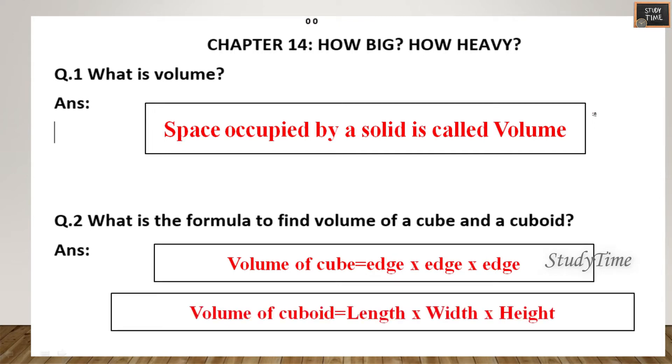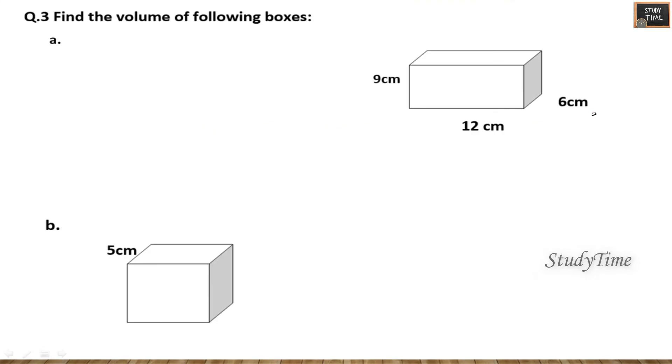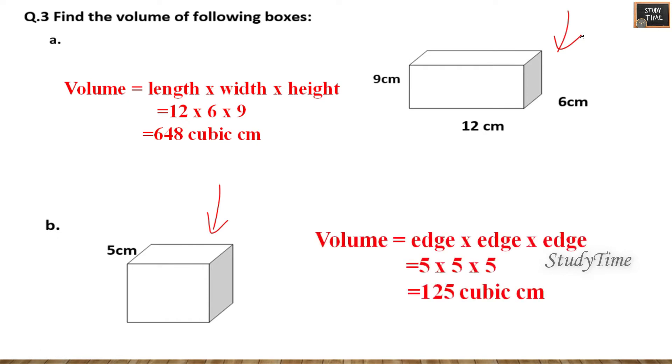Next, find the volume of the following boxes. So for this you have to multiply length, width and height. The answer is 648 cubic centimeter. Next this is cube and this is cuboid. So 5 centimeters given, you have to multiply 5 into 5 into 5. The answer is 125 cubic centimeter.